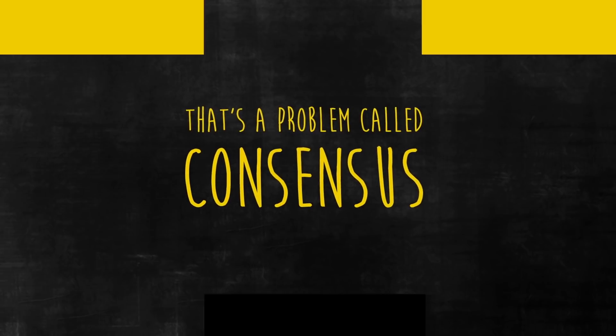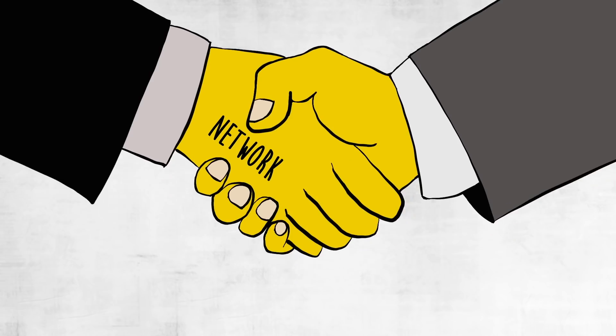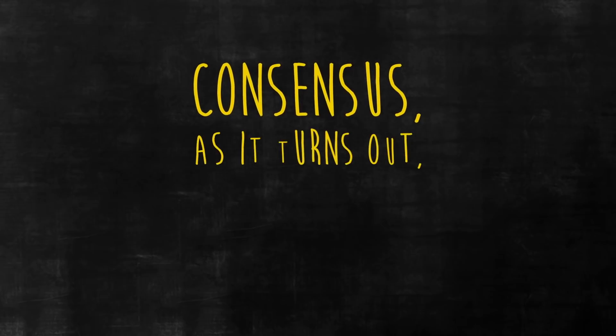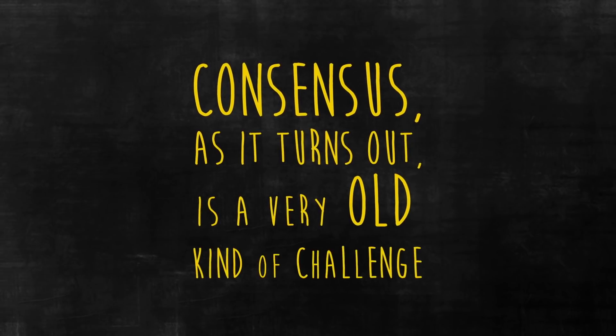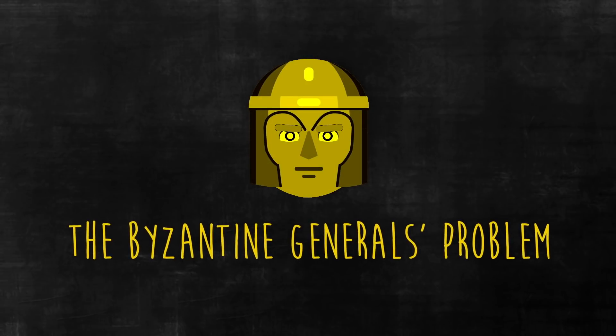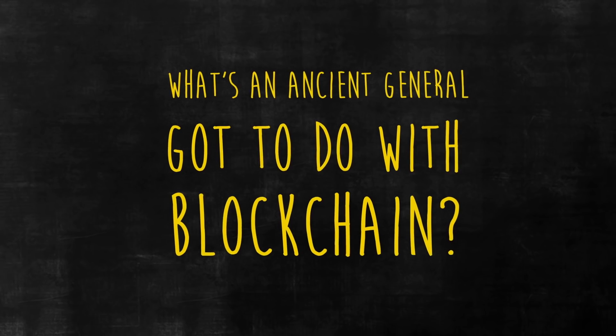That's a problem called consensus, which is really about maintaining agreement on a network. Consensus, as it turns out, is a very old kind of challenge, which mathematicians and computer scientists call the Byzantine generals problem. What's an ancient general got to do with blockchain?